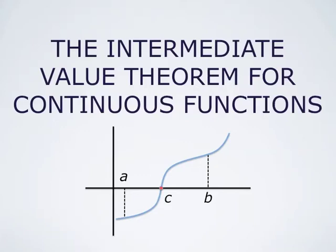The Intermediate Value Theorem is a cornerstone of the theory of continuous functions. It says that a function which is continuous on an interval takes any value between any two of its values. Most often this is applied to the situation where the function takes a negative value at some point A, a positive value at some point B, and we can conclude that between A and B there is a point C at which the function takes the value zero. The most common application of this is to showing that certain equations f(x) = 0 have solutions.